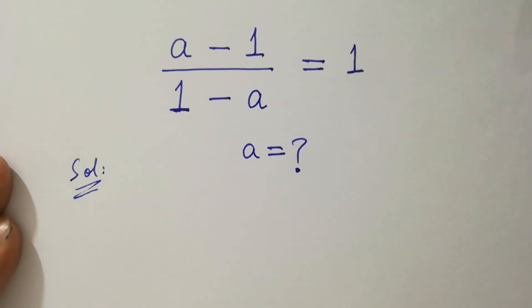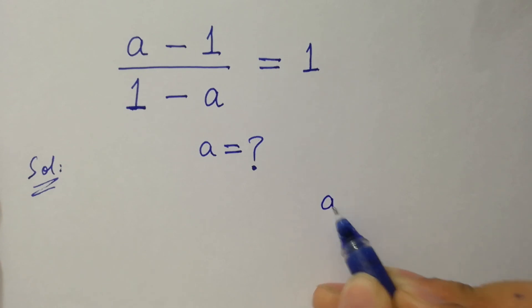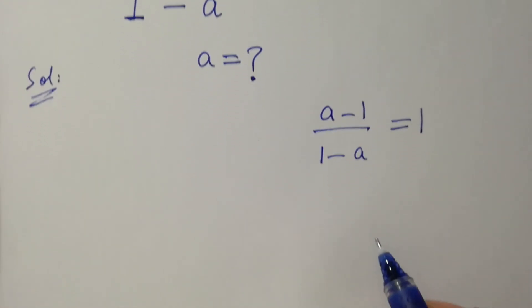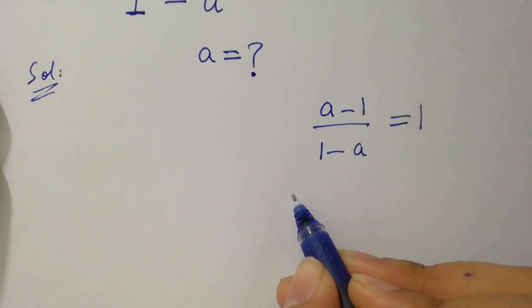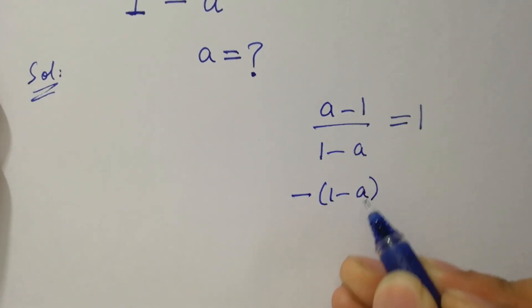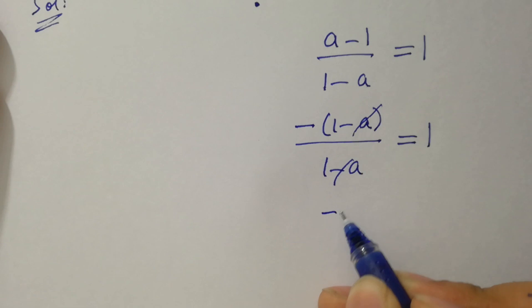If you see this problem, (a minus 1) over (1 minus a) equals 1, which is the same as minus (1 minus a) over (1 minus a) equals 1. (1 minus a) cancels, we have minus 1 equal to 1.